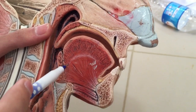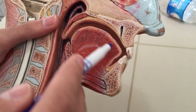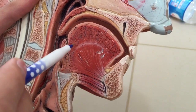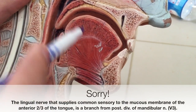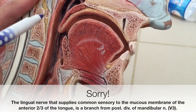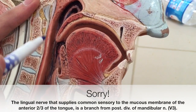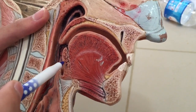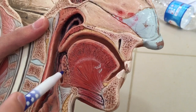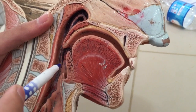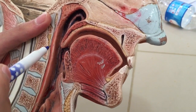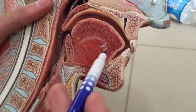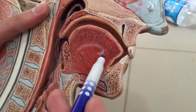The sensory nerve supply to the mucous membrane of the anterior two-thirds is through the lingual nerve, which is a branch from the anterior division of the mandibular nerve. The sensory supply to the mucous membrane of the posterior one-third of the tongue is through the lingual branch of the glossopharyngeal nerve.